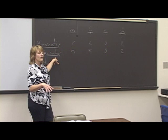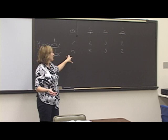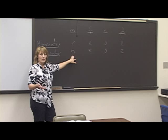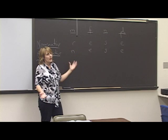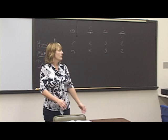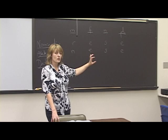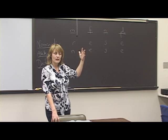The accusative is the direct object of the sentence, and the only thing that changes is the masculine. So when you have a direct object, the masculine becomes den instead of der, or diesen. The question word changes to wen, welchen, and the ein-words change to einen, meinen. Everything else stays the same. Also, we talked about the accusative being used after certain prepositions: um, ohne, durch, für, gegen — those five.